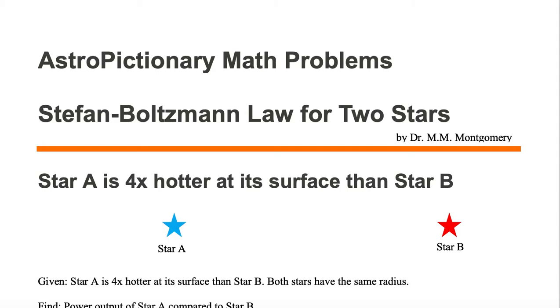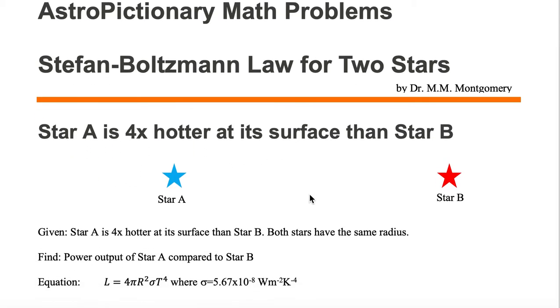In this astro-pictionary math video, we want to solve the Stefan Boltzmann law for two stars. We have star A and star B. For star A, it is four times hotter at its surface than star B.